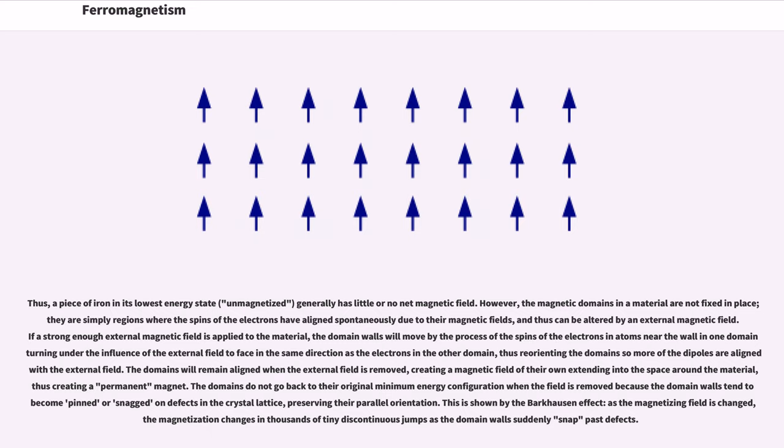If a strong enough external magnetic field is applied to the material, the domain walls will move by the process of the spins of the electrons in atoms near the wall in one domain turning under the influence of the external field to face in the same direction as the electrons in the other domain, thus reorienting the domain so more of the dipoles are aligned with the external field. The domains will remain aligned when the external field is removed, creating a magnetic field of their own extending into the space around the material, thus creating a permanent magnet.